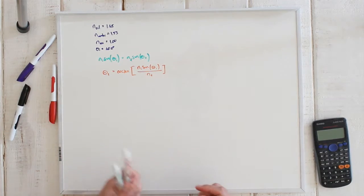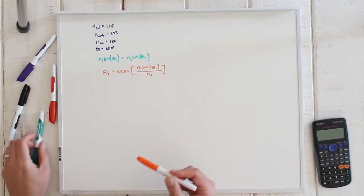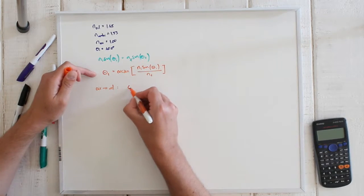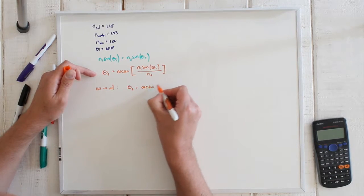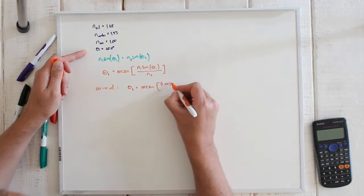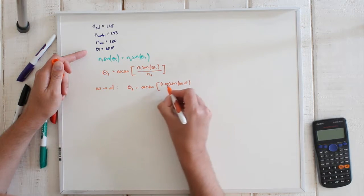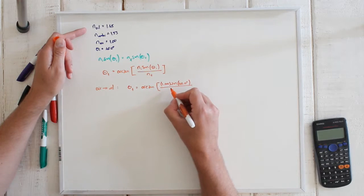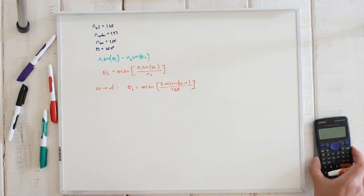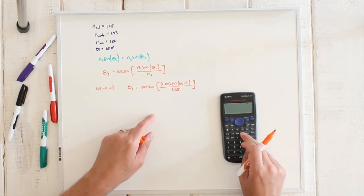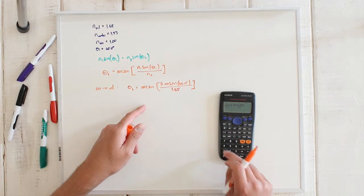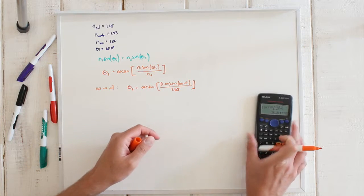That has got to be our answer. First, let's go from air through the oil. Theta equals the arc sine of the incident medium, air, which is 1.00, times the sine of 40.0 degrees, divided by N_t, the oil, which is 1.45. Doing that on the calculator gives us about 26.3 degrees.